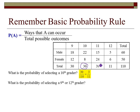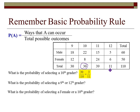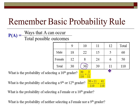Now I want to find the probability of getting a 9th or a 12th grader. All I'll do is add up all the 9th graders — there are 30 — and the 11 12th graders, giving a total of 41. So that's 41 out of 110, just by adding 30 plus 11.